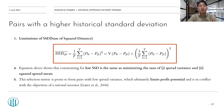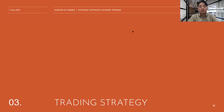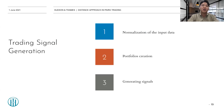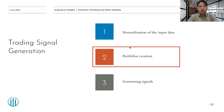Now it is time to see how we can use these pair selection methods in real trading. Trading signal generation also consists of three parts. First, we normalize the input data, as we use different data sets for the formation and trading periods — we have to keep the scale of price series the same in both periods. Then we create portfolios with the pairs selected, and lastly we generate signals based on the portfolios. The normalization of input data here is the same as in pair selection — just min-max normalization.